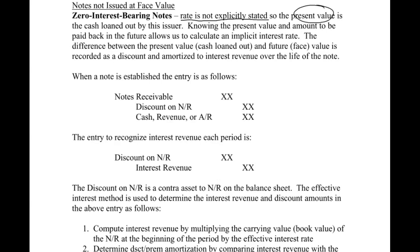What we're going to do is determine the present value of the note. Anytime you see present value, you should be thinking you need to use your financial calculator or the tables in the book. The present value will be the amount that we actually loan out — we're assuming we're loaning out cash to somebody and they'll sign a note. Knowing the present value and the amount to be paid back in the future allows us to determine an implicit interest rate.